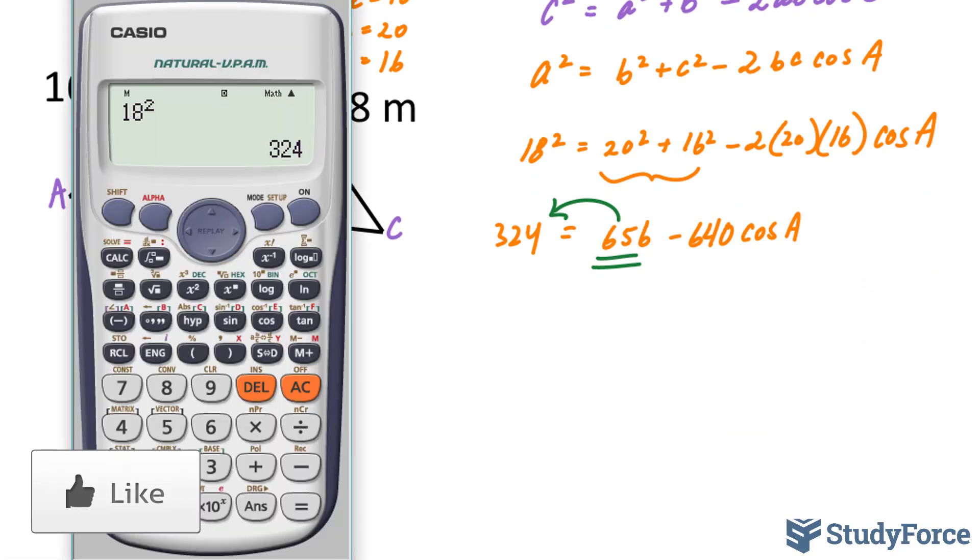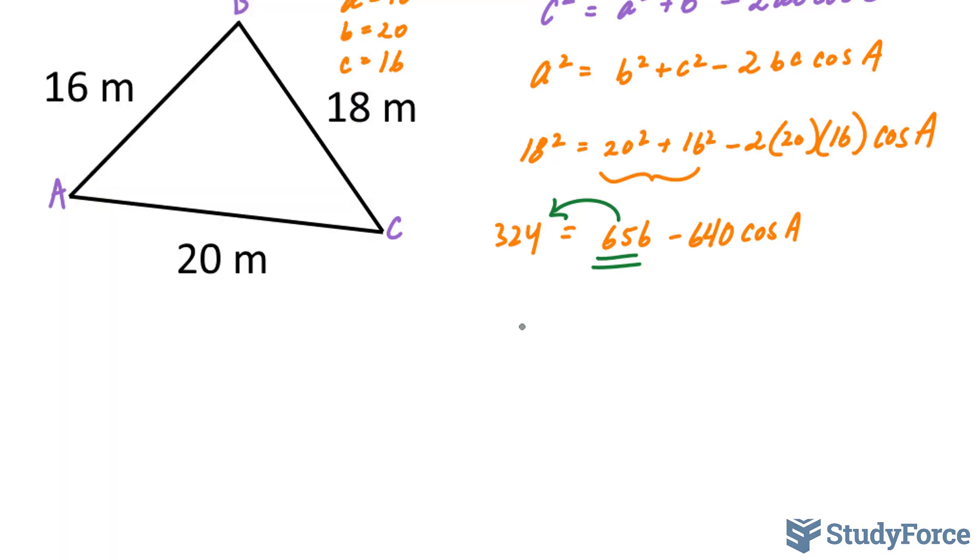324 - 656 became negative. And this gives us -332 = -640 cos A. It's very important that you do this carefully. If you do not do this carefully, and if you do not do it stepwise, like how I showed you, you're likely to make an error.